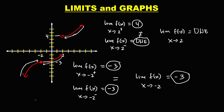To find f(+2): look for the shaded circle. Since at x equals positive 2 there is no shaded circle, this function does not exist. For f(−2): since this is the shaded circle, this function is equal to negative 3.